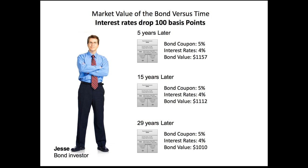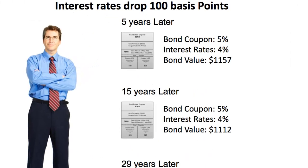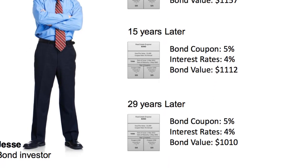In the last scenario interest rates raised, but now we're going to look at Jesse holding the bond for five years and then looking to sell. His coupon rate when he bought it was 5%, but interest rates are lower at 4%, and his bond value is $1,157. At the 15-year mark, same coupon, interest rates down 1%, his bond value is now $1,112 — which is lower. And at the 29-year mark, really close to maturity, the bond value is close to par value at $1,010.